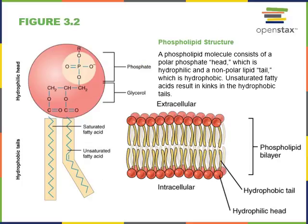The structure of the plasma membrane is mostly a bilayer of phospholipids. A phospholipid has a hydrophilic head made of phosphate and glycerol. Hydrophilic means water-loving, so the hydrophilic head will orient towards the water in the extracellular and intracellular fluid.